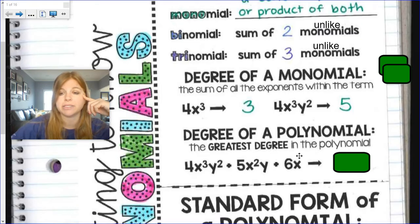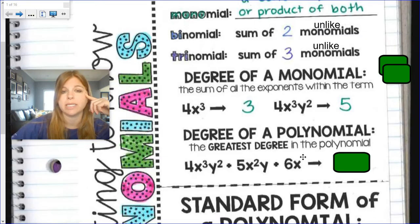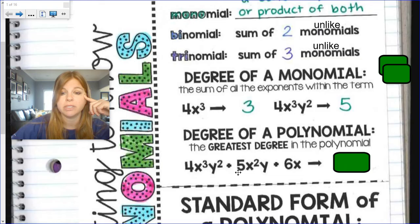The last term has a degree of 1 because think about it, there is really an exponent of 1 there. So then the degree of the poly is whatever the greatest degree is. First term has a degree of 5, second term has a degree of 3, last term has a degree of 1. Which one's the highest number? 5, 3, or 1?